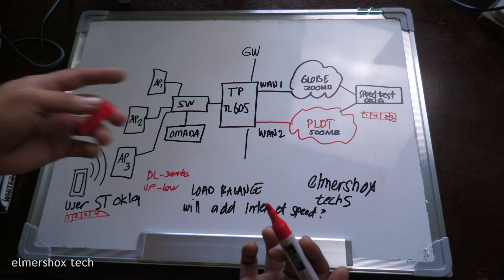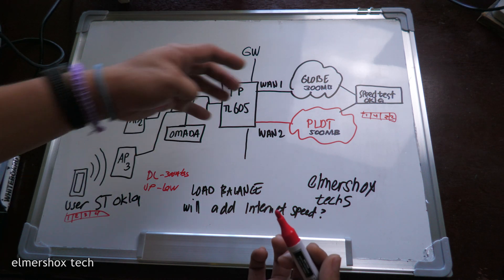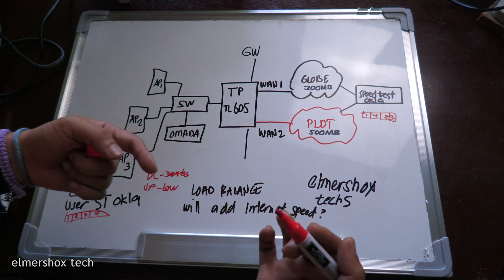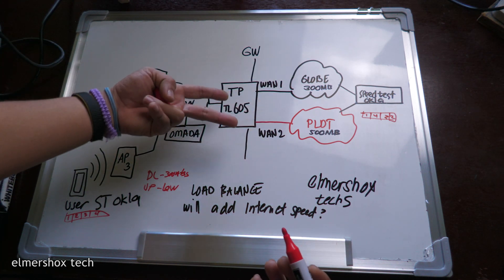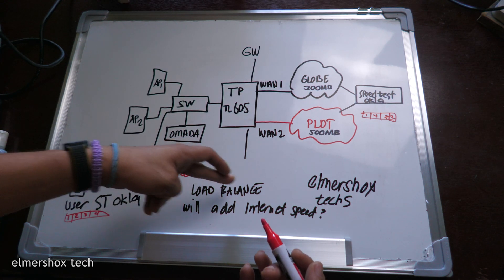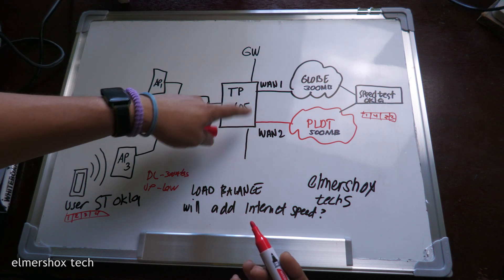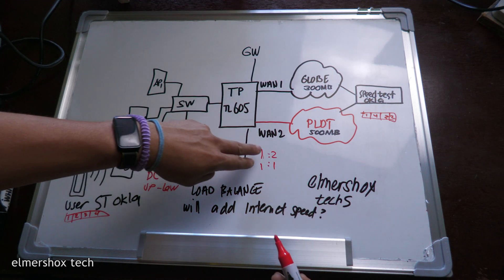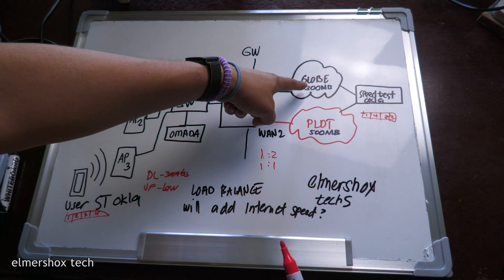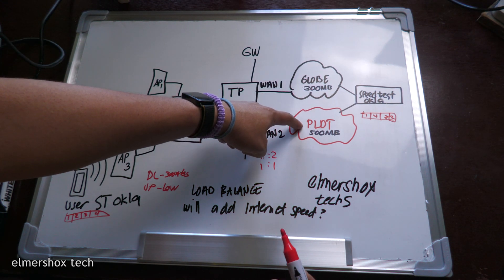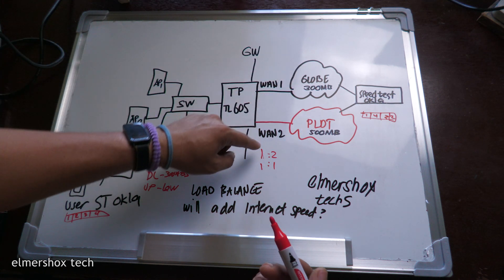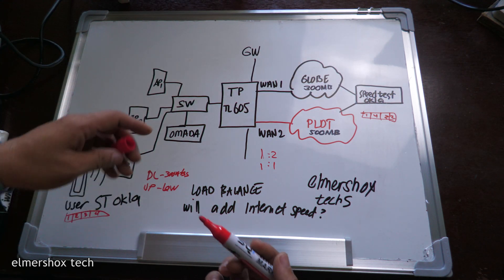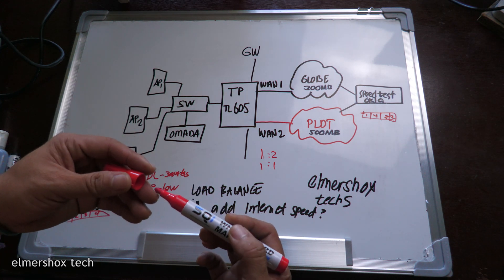TP-Link is just load balancing. When you say load balance, it sends traffic depending on the ratio you have set — like 1:2 or 1:1. With 1:2, you send one packet via Globe and two packets via PLDT, because PLDT has higher speed. With 1:1, both are alternating, each sending towards the ISP.